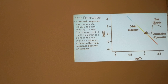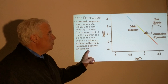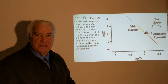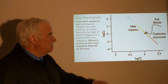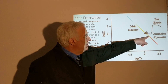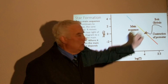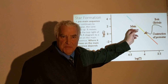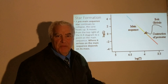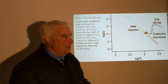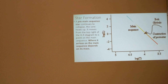A pre-main sequence star continues to collapse, the core heats up, and it moves from the upper right of the HR diagram to a point on the main sequence. Where it arrives on the main sequence depends on its mass, because of the mass-luminosity relation. Lower mass stars arrive lower on the main sequence; higher mass stars arrive higher up. That is the process of star formation.